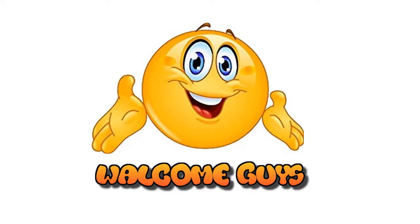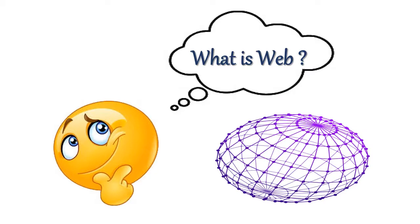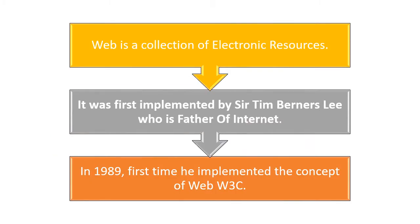Welcome guys, let us discuss something about what is Web. A collection of electronic resources is called Web. The Web concept was first time implemented by Sir Tim Berners-Lee, well known as the Father of the Internet. In 1989, he first implemented the concept of Web and W3C.